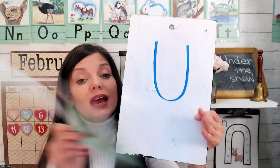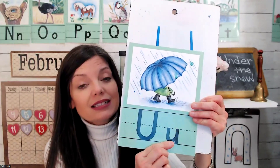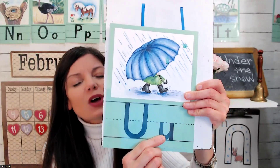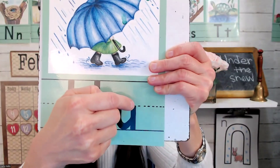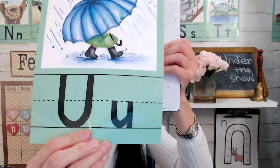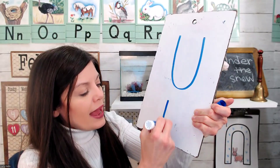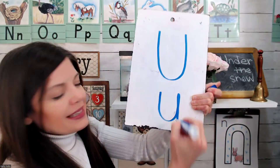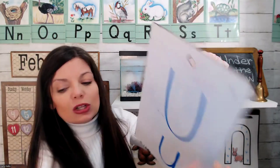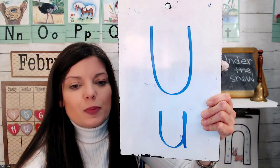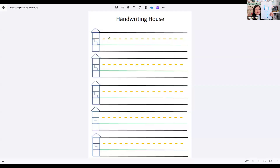Every letter has two — an uppercase and a lowercase. This is lowercase U. It's almost the same, but when you get to the top, come straight back down. I'll show you. Go down, curve around, and up, and straight back down. That's the lowercase letter U. Let's practice. Down, curve around, up, and down.